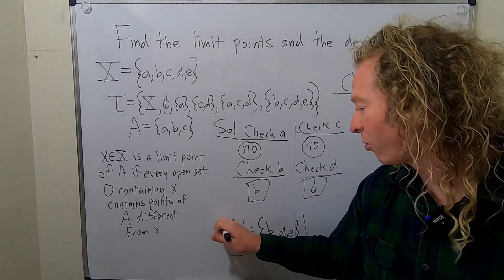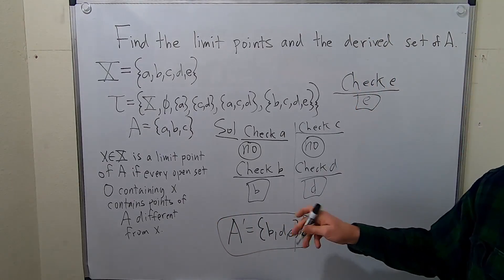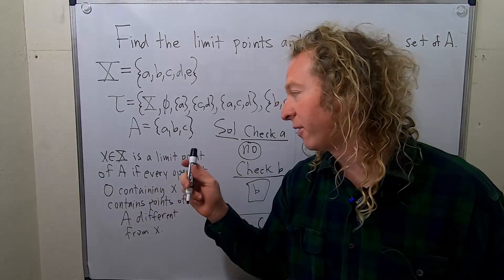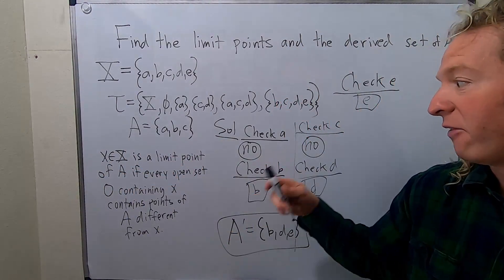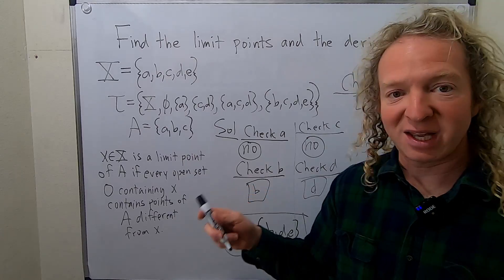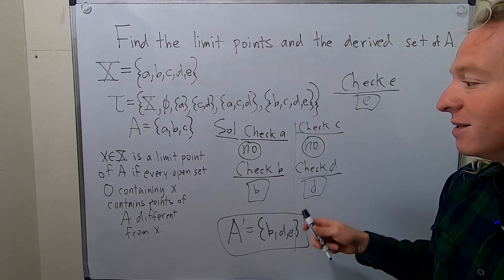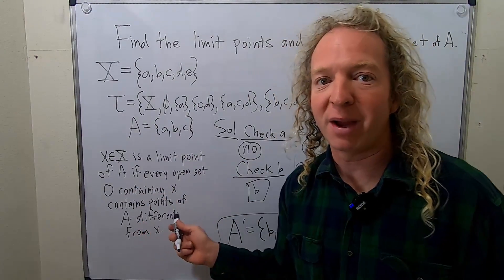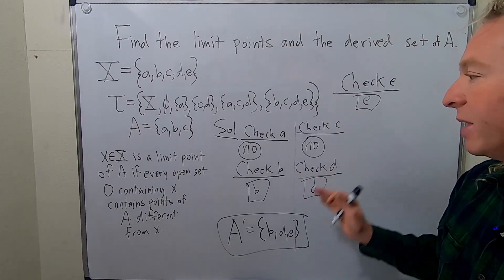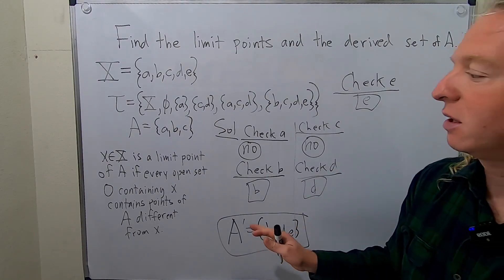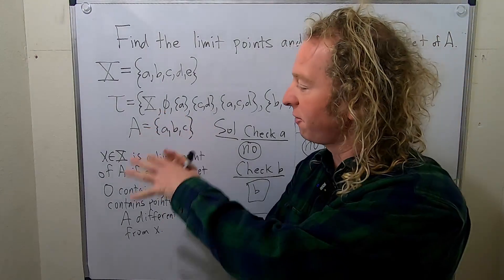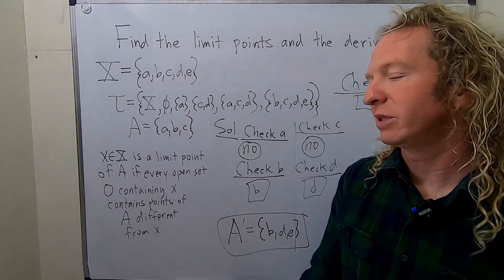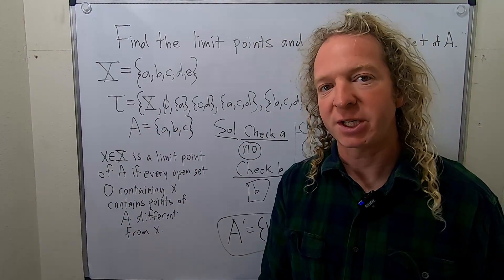To recap: little x in capital X is a limit point of A if every open set containing x has points of A different from x. I hope this video has been helpful — it takes some effort and time to get comfortable with this definition. Take care.